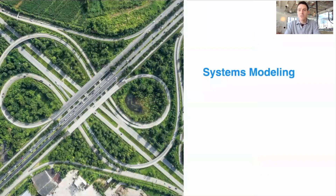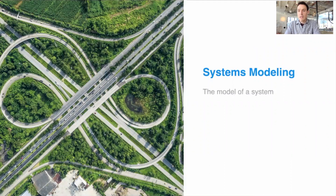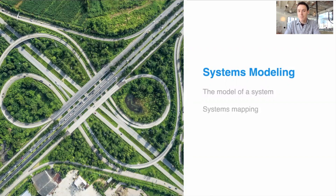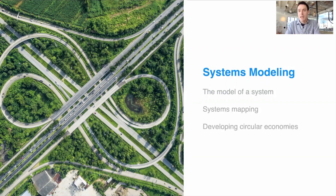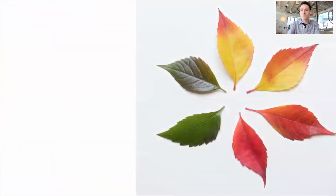The second section is on systems modeling, where we'll try to represent and map out systems. Starting off with what exactly the model of a system is and how it can help us better define sustainability from a systems perspective. We'll look at systems mapping of different elements and factors in a system, and how this can help us build new connections and collaborations for a circular economy.